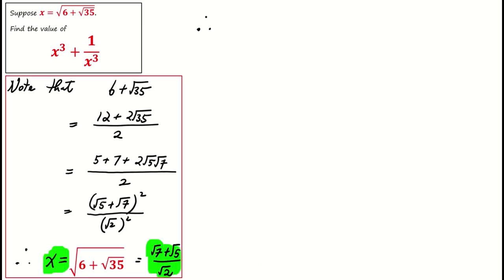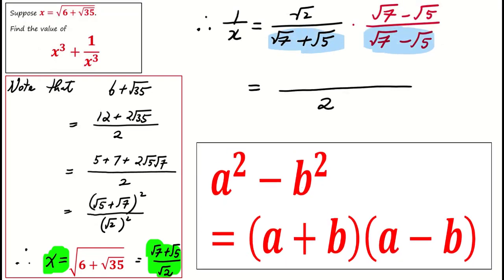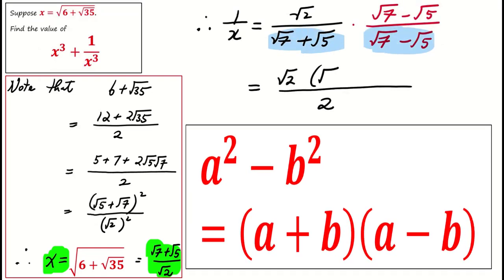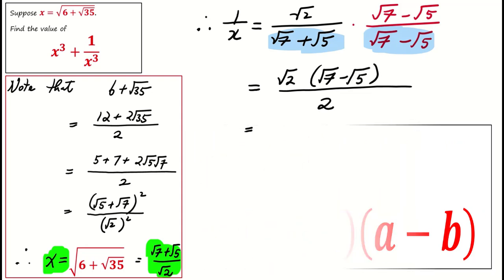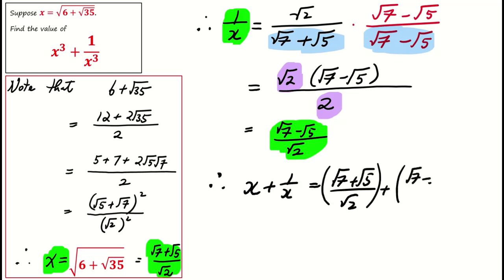Using this result, we get 1 over x equals square root of 2 over square root of 7 plus square root of 5. Multiply with the conjugate, and using the formula a² minus b² equals (a + b)(a - b), we get 1 over x equals square root of 7 minus square root of 5 over square root of 2. Get the sum of x and 1 over x, we obtain square root of 14.